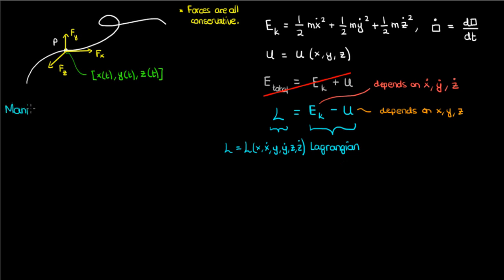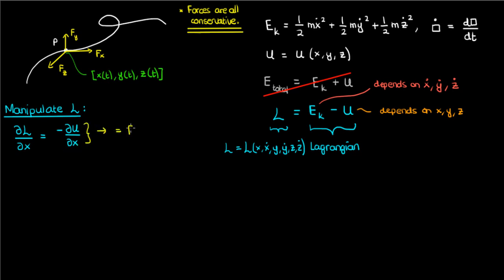Let's manipulate this Lagrangian quantity now. We'll start by taking the partial derivative with respect to x, which would just turn out to be the negative partial of u with respect to x, because only u depends on x — the kinetic energy just depends on the velocities. Because the forces are conservative, f equals the negative of the gradient of u, which means the negative partial of u with respect to x can be written as fx, the force in the x-direction.